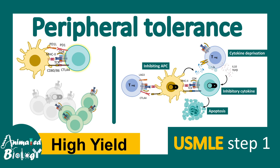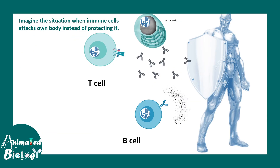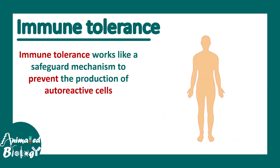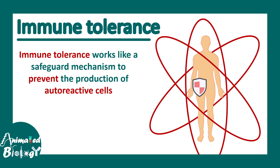In this video we'll talk about peripheral tolerance. This is a high-yield topic for USMLE part 1. Imagine the situation when your immune cell attacks your own body instead of protecting it — this kind of scenario leads to autoimmune disorders. But thanks to our tolerance mechanism, it works like a safeguard to prevent auto-reactive cells and protect our body. Sometimes this tolerance mechanism also goes wrong in autoimmune disorders, which is why understanding these mechanisms is crucial.